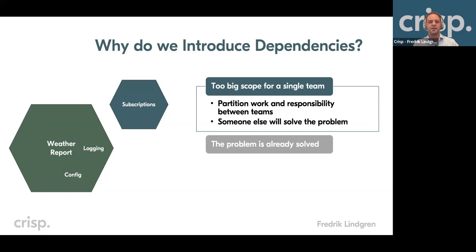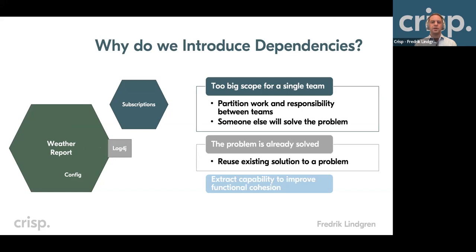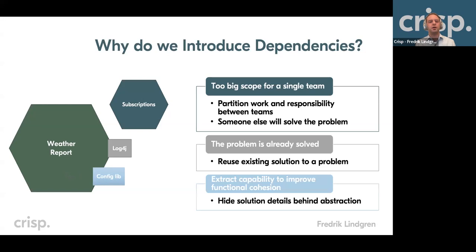Another reason we introduce dependencies is because the problem is already solved. For example, for logging, there are several nice libraries out there that we can just bring in as dependencies without implementing the details ourselves. The third reason is that we want to extract a capability to improve the functional cohesion of our software — so our team can focus on the weather domain and not spend brain cycles on the best way to dynamically configure a microservice. One important thing is to hide solution details behind those abstractions.